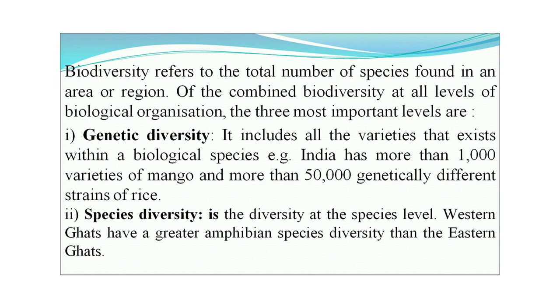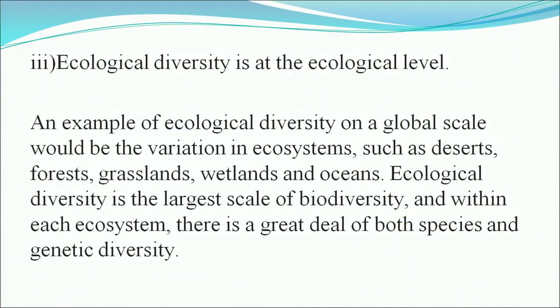For example, India has more than one thousand varieties of mango and more than fifty thousand genetically different strains of rice. Species diversity is the diversity at the species level — the Western Ghats have greater amphibian species diversity than the Eastern Ghats. Ecological diversity is at the ecological level; an example would be variations in ecosystems such as deserts, forests, grasslands, wetlands, and oceans. Ecological diversity is the largest scale of diversity, and within each ecosystem there is a great deal of both species and genetic diversity.